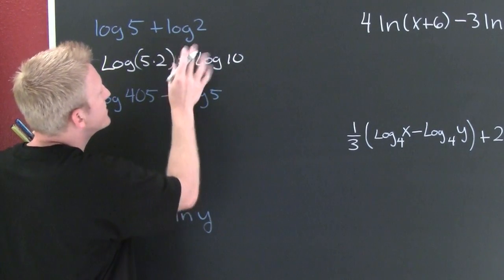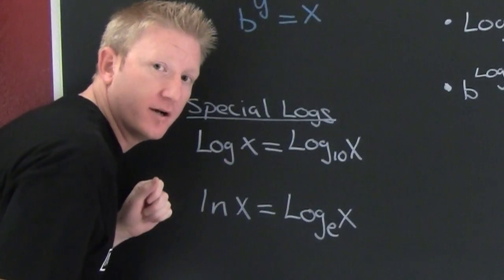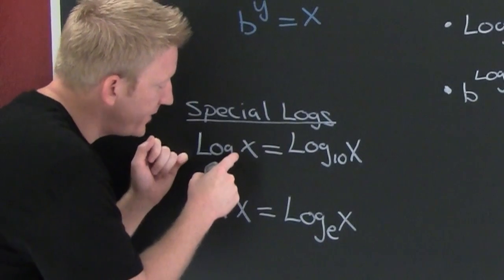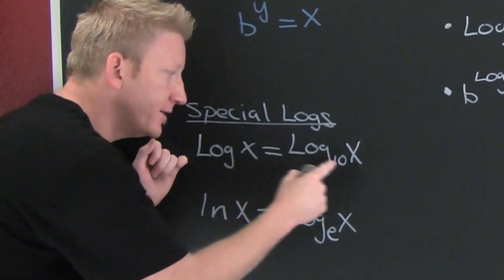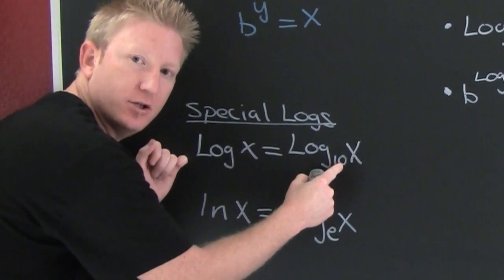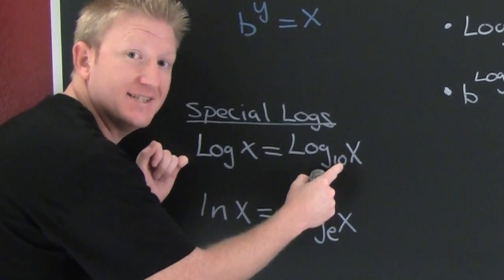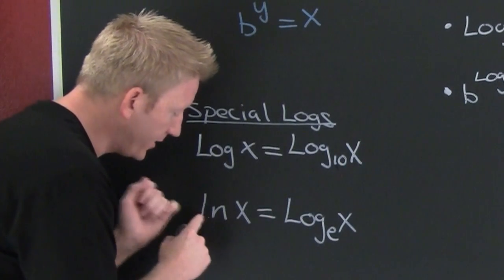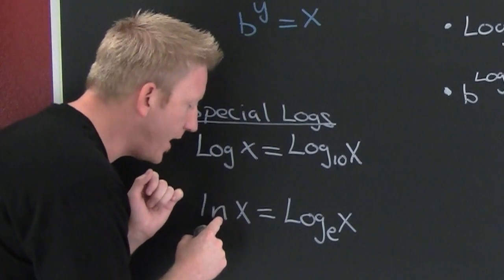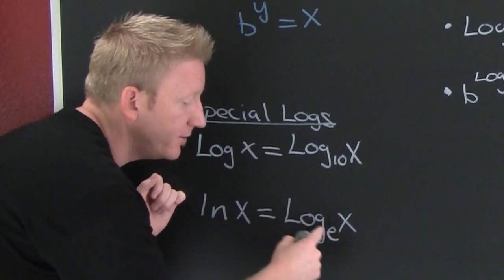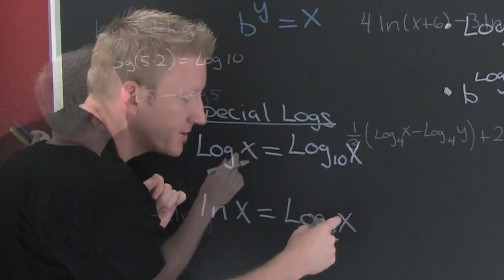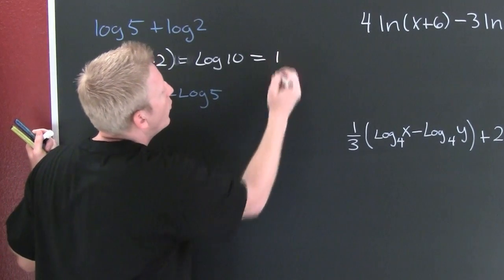Oh, that's one of your special logarithms. Special logs? If there's no base written, it's log base ten, your common logarithm. We're on a base ten system. The natural log, ln, log natural, is really log base e of x. So this is going to be one.